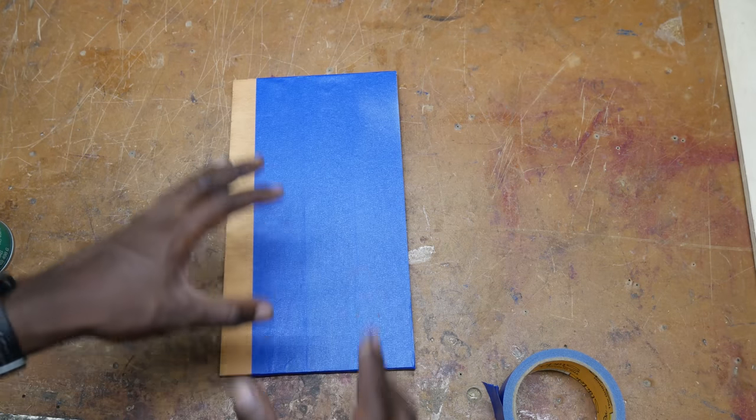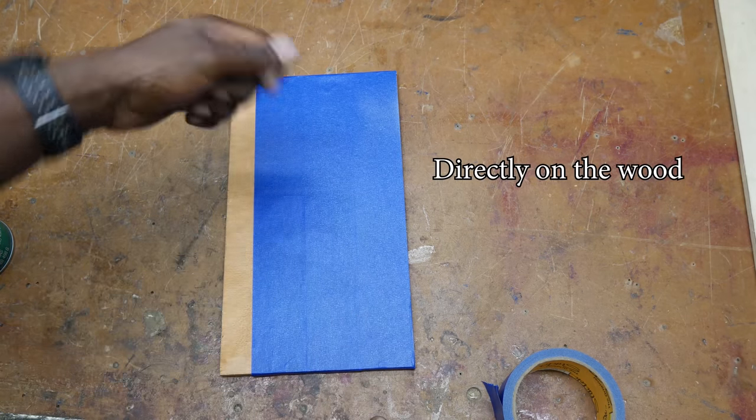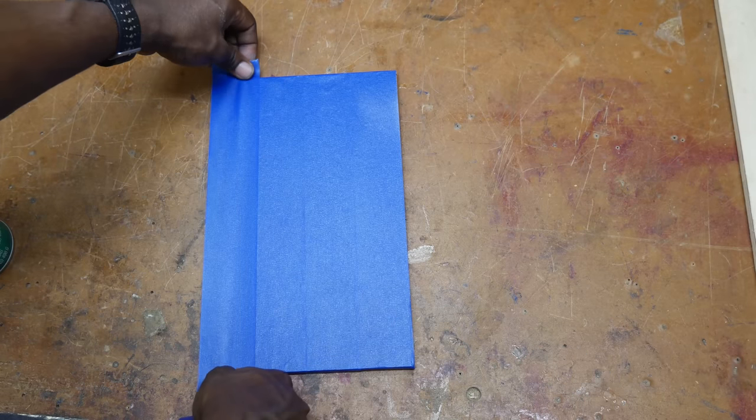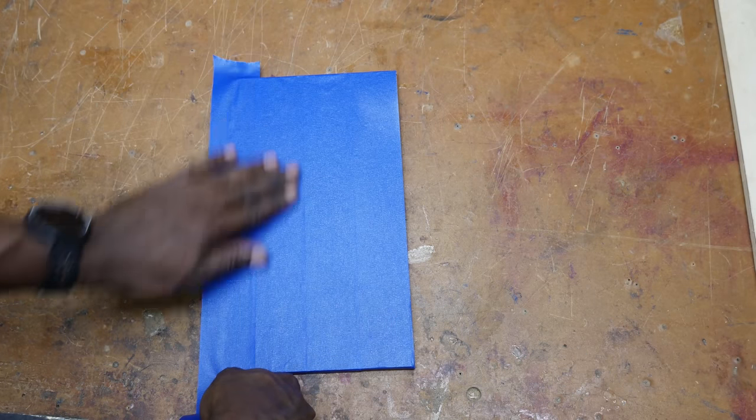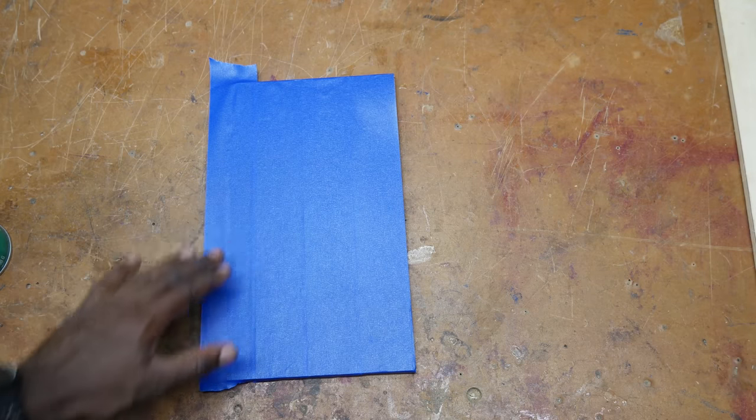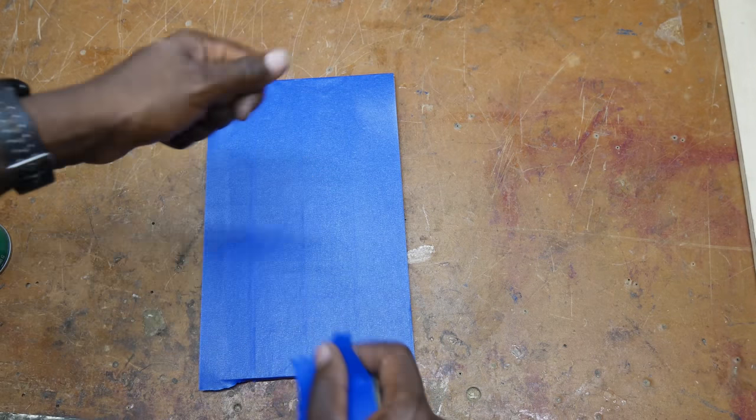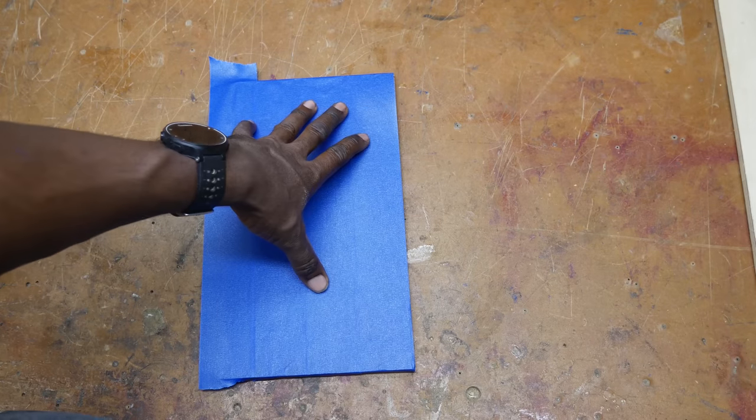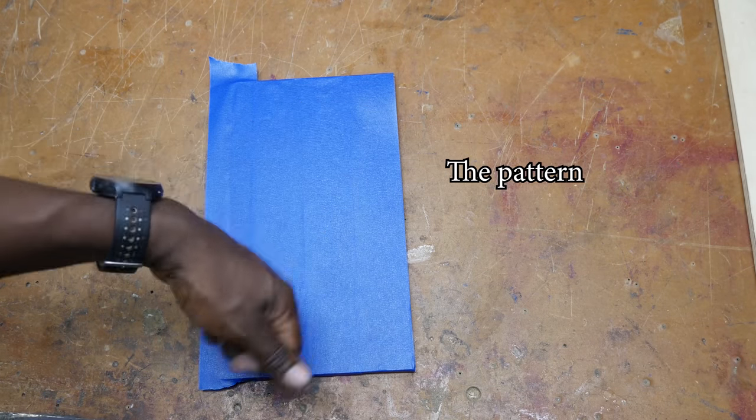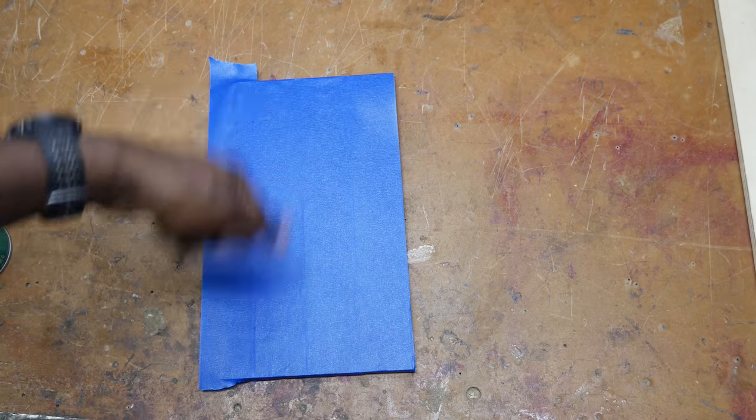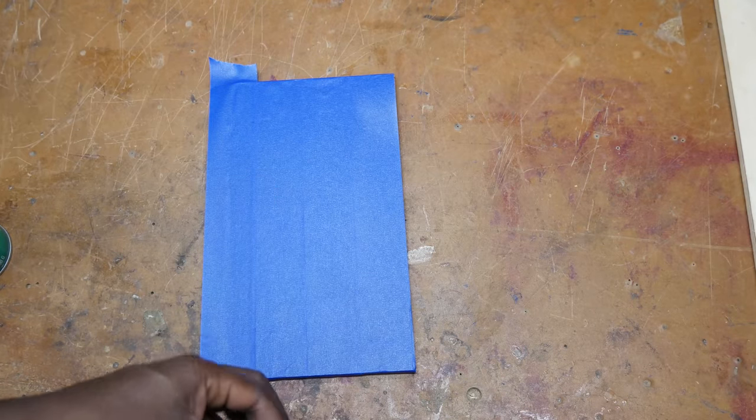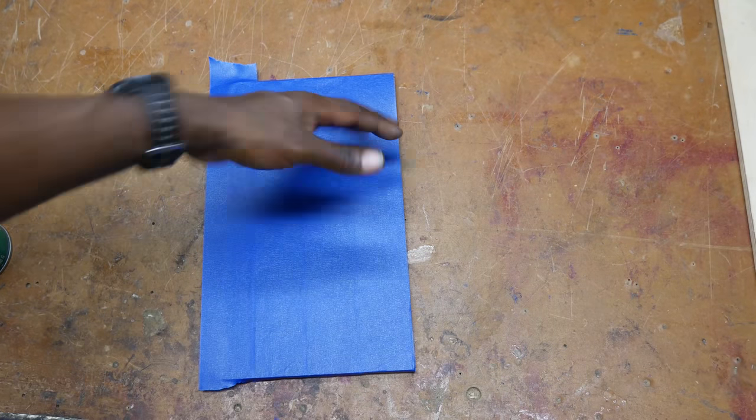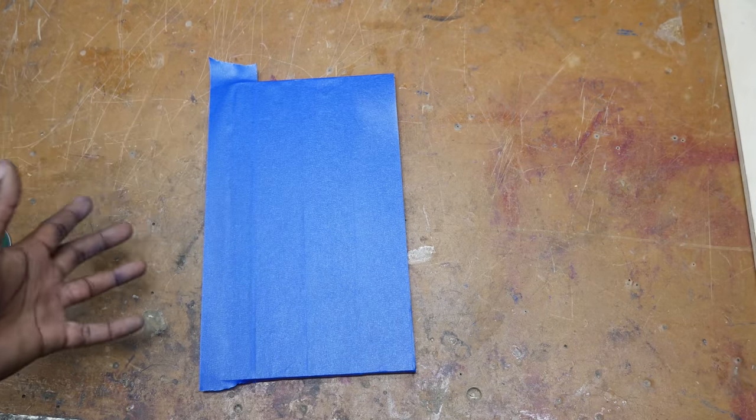Some people use like contact cement and then mineral spirits to clean it off. Prior to doing this, what I did was no blue tape. I would just use the repositionable glue and glue that directly to the wood. And then I'd use a heat gun to try to warm the glue back up and peel it off. That didn't always work. I would still often have to use mineral spirits to clear it off.